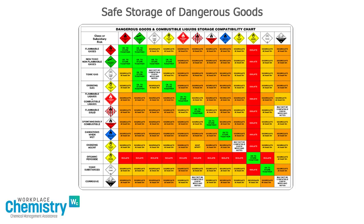So now let's apply the chart. We'll start with the storage of a flammable liquid with an oxidising agent. We find flammable and combustible liquids here in the first column, and we find oxidising agents here in the top row. Where this row and this column intersect gives us guidance on the storage of the two products. In this case, we should segregate these products by at least five metres.